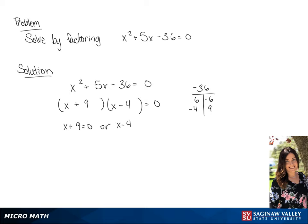So we're going to set each binomial equal to 0. So we have x plus 9 equals 0, or x minus 4 equals 0. So our answer is going to be x is equal to negative 9, or x is equal to 4.